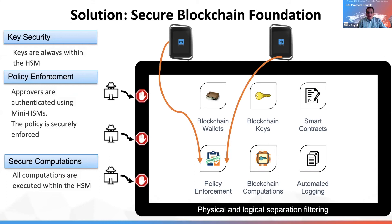Our platform addresses this: the blockchain wallets are stored inside the vault, the blockchain keys are stored inside the vault, all the smart contracts which govern the execution of certain transactions are executed and verified inside the vault, the policies of the approvers of the blockchain transactions are also done inside the vault, and all of these transactions are logged automatically inside the vault. Getting the data onto the blockchain is done in a very secure environment, increasing the confidence that people can have in storing their money.